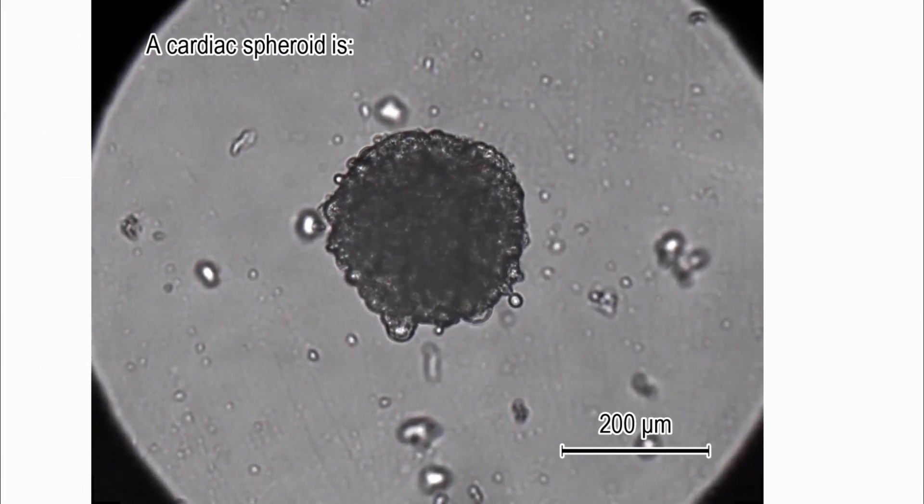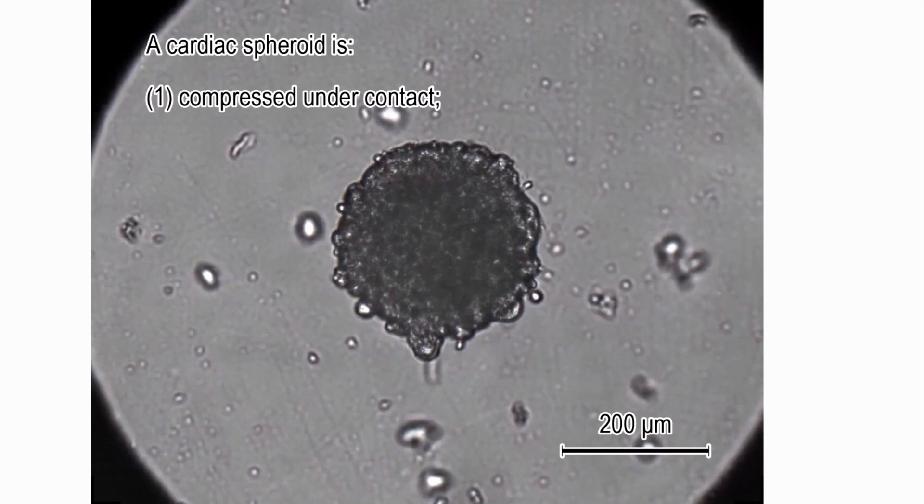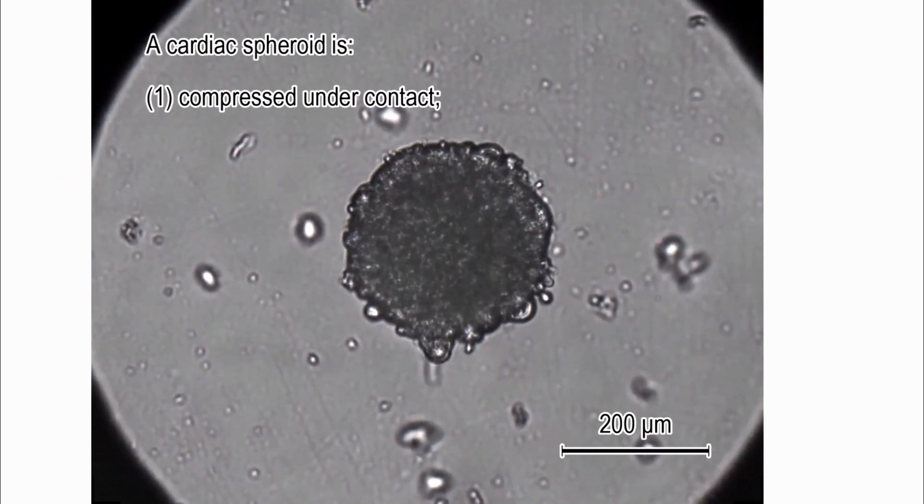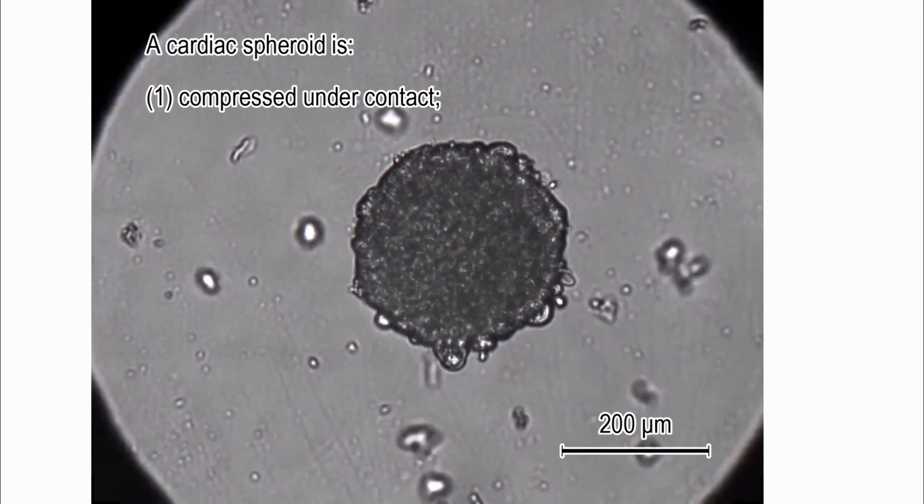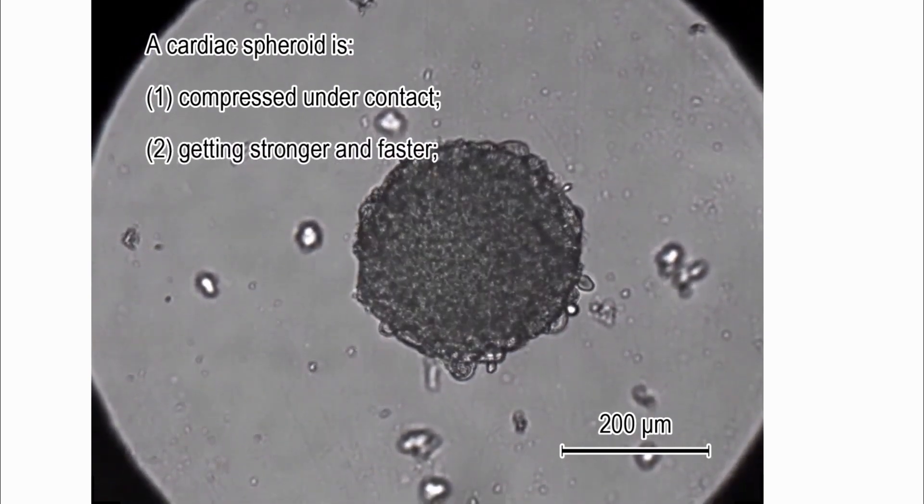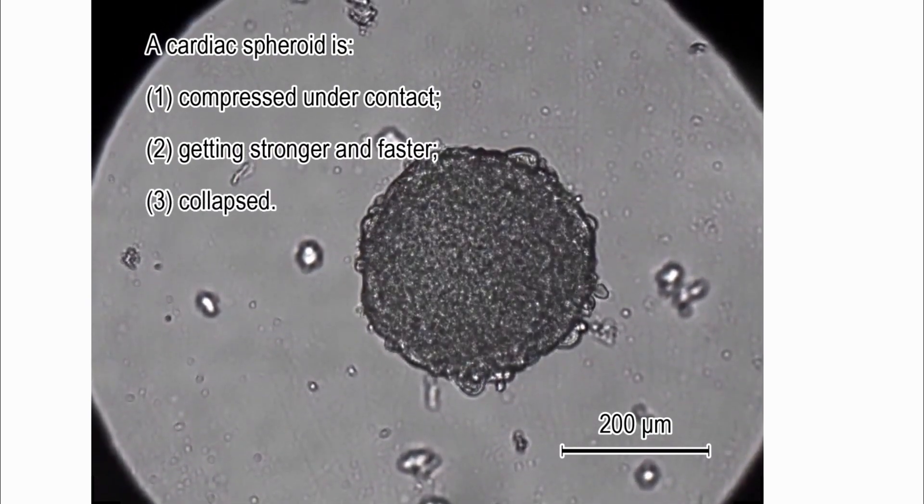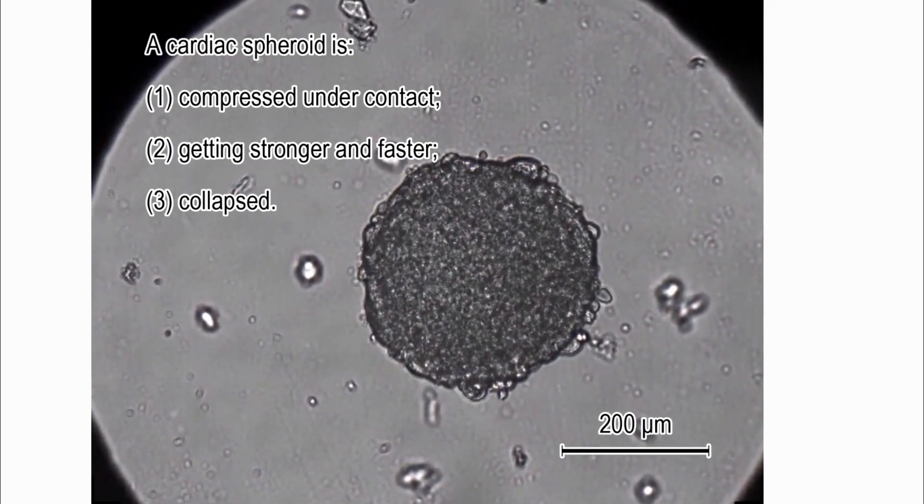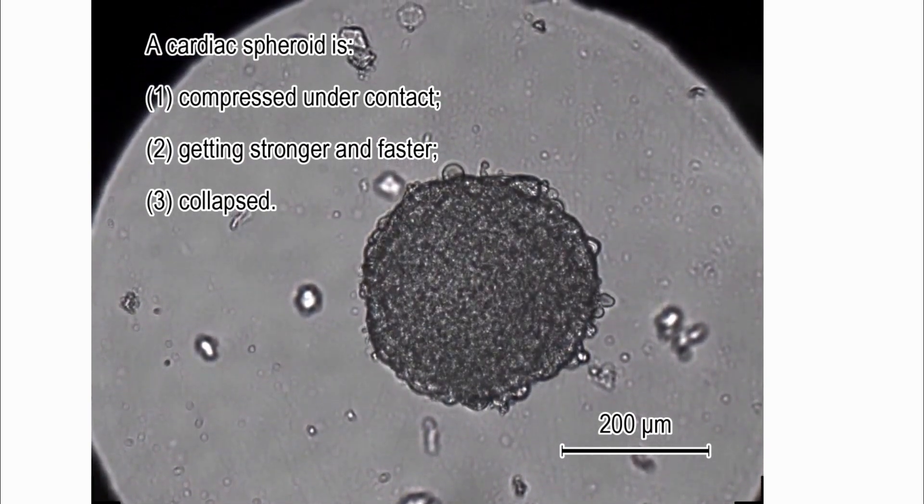We see a cardiac spheroid, which initially is beating spontaneously. At some moment, it comes into contact with the spring, and the normal force starts to increase gradually. This leads to an increase in frequency and amplitude of beating until some threshold force is achieved. After that, the process collapses completely.